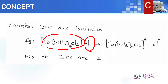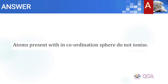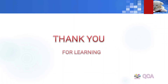They do not ionize. When the counter ion is ionizable, we get two ions, so the total number of ions is two. The atoms, ions, or molecules that are present in the coordination entity do not ionize. So the first option is correct. Thank you for learning.